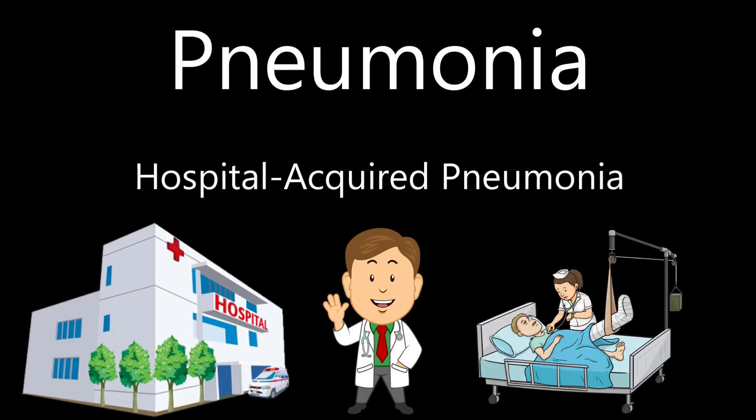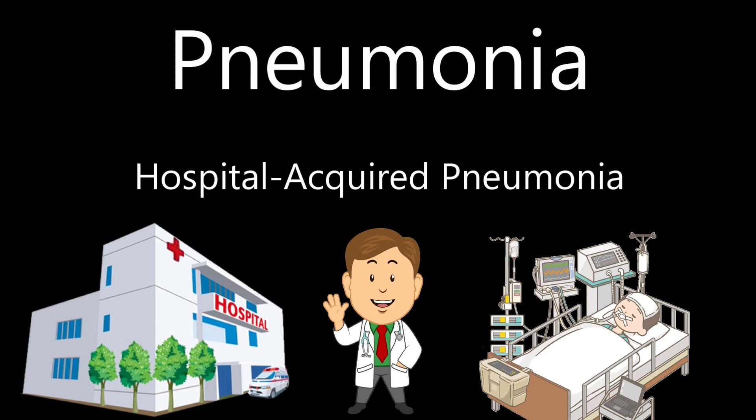Hospital acquired pneumonia occurs when some people catch pneumonia during a hospital stay for other illnesses. It can be serious because the bacteria causing it may be more resistant to antibiotics, and because the people who get it are already sick. People who are breathing on ventilators, often used in intensive care units, are at higher risk for this type of pneumonia.